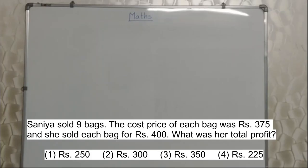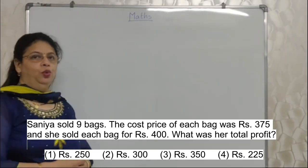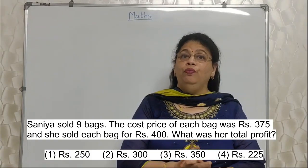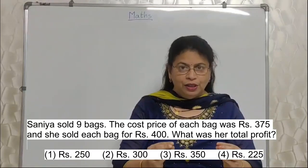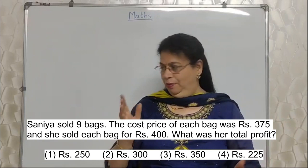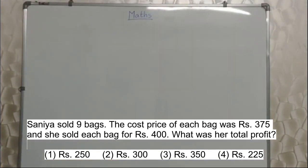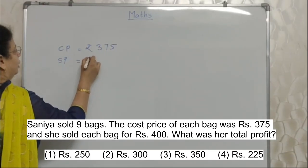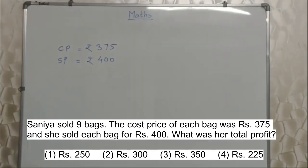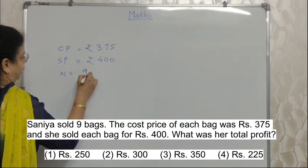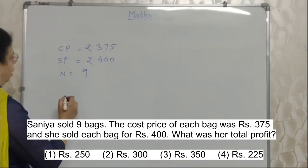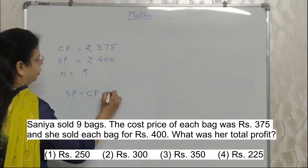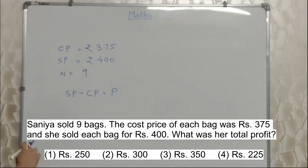Students, read the next sum properly. Saniya sold 9 bags. The cost price of each bag was Rs. 375, and she sold each bag for Rs. 400. What was her total profit? See students, we are giving competitive exams. Right? So we need to work smartly. In minimum possible efforts, we should get maximum results. So simple. What I am trying to tell you is that, here they have given the cost price as Rs. 375, and sale price is Rs. 400. Right? And how many bags are there? 9 bags. So you know the formula: SP minus CP is equal to profit. Selling price minus cost price will give you profit. We all know this simple formula. Right?